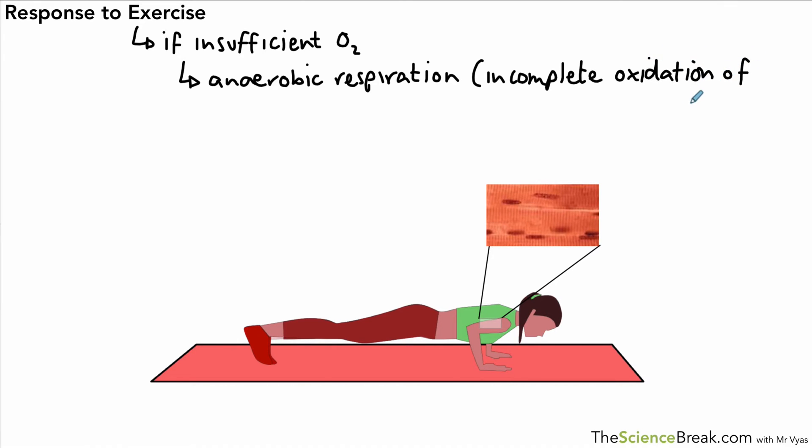Aerobic respiration is an oxidation reaction, and without the oxygen, we get incomplete oxidation, so much less energy released. You'll remember that the word equation for anaerobic respiration in animals was glucose is converted to lactic acid, and this lactic acid actually is a little bit toxic. So when it builds up in the muscles as a result of anaerobic respiration, it has to be removed.